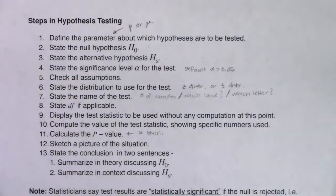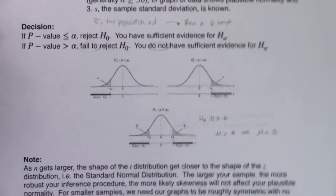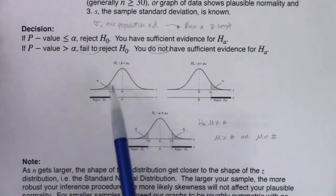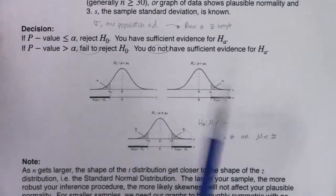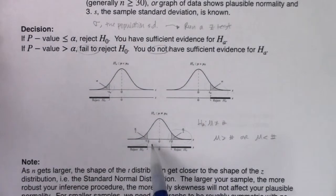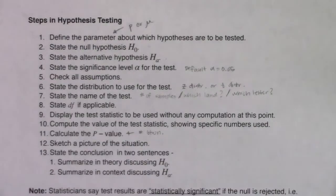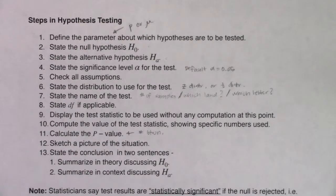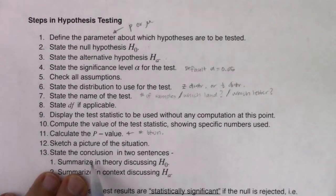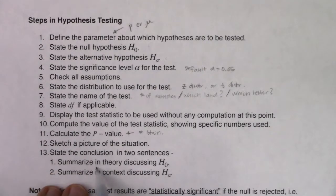When sketching pictures, you owe me one of three graphs: left-tailed, right-tailed, or two-tailed, shaded appropriately. For step thirteen — the conclusion — you owe me two sentences: first, tell me if you're rejecting or failing to reject the null; then tell me if you have evidence, or don't, for the alternate.